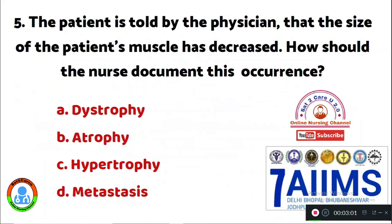Question 5: The patient is told by the physician that the size of the patient's muscle has decreased. How should the nurse document this occurrence? Option A: dystrophy. Option B: atrophy. Option C: hypertrophy. Option D: metastasis. The right answer is Option B, atrophy.